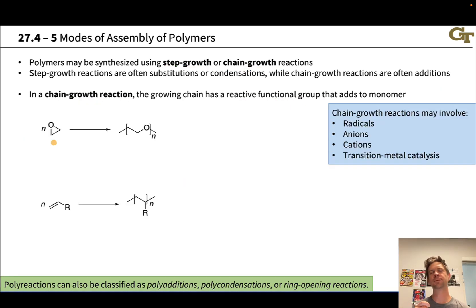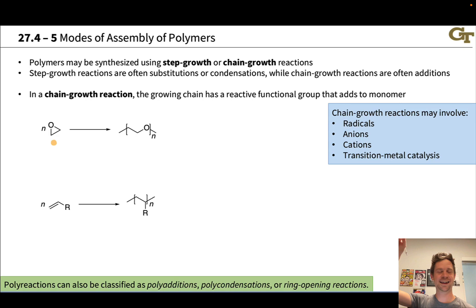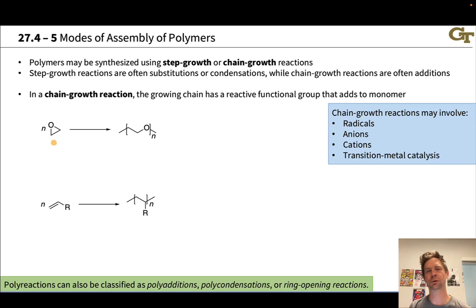In a chain growth reaction, monomer adds to the reactive end of a growing chain, but there's only one reactive end. This means each reaction event lengthens the polymer by only one monomer unit. This is the hallmark of chain growth — it's highly intuitive, like adding beads to the end of a necklace, lengthening the chain one bead at a time. Chain growth is more intuitive than step growth, where length grows exponentially with each reaction event.